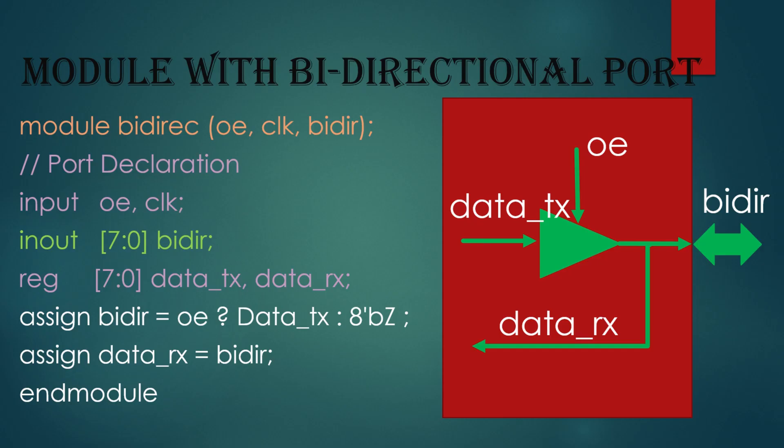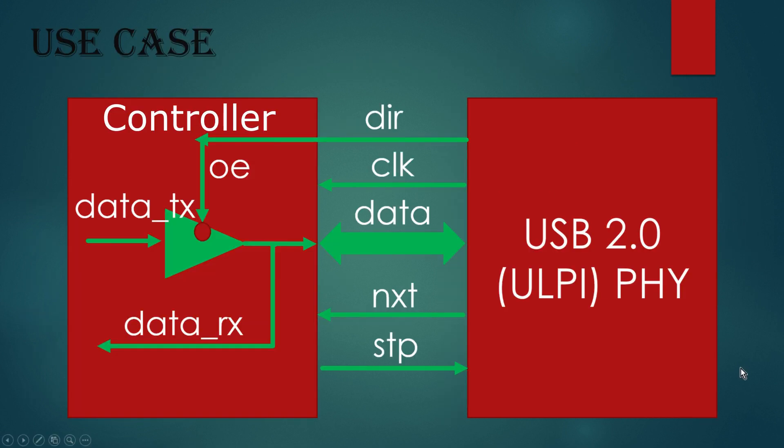Friends, now I am going to quote one of the practical use cases. In this use case, I have included USB 2.0 ULPI PHY which is interacting with its controller layer. And this interface is called ULPI interface. It consists of DataBus which is bi-directional and its functionality is clubbed with DIR signal which is output of physical layer.